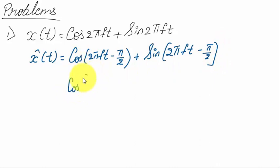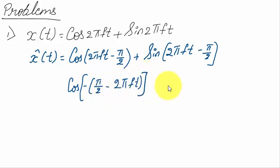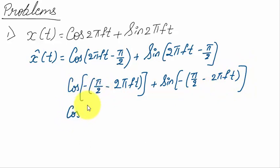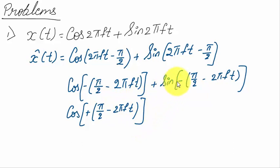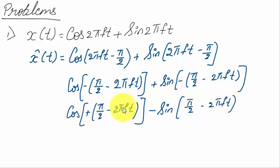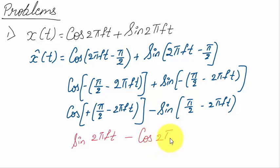Taking minus as common: cos(2πft − π/2) = cos(−(π/2 − 2πft)) = cos(π/2 − 2πft) since cos(−θ) = cos(θ). And sin(2πft − π/2) = sin(−(π/2 − 2πft)) = −sin(π/2 − 2πft). Now, cos(π/2 − θ) = sin(θ), so the first term becomes sin(2πft). And sin(π/2 − θ) = cos(θ), so the second term becomes −cos(2πft). Therefore x̂(t) = sin(2πft) − cos(2πft).